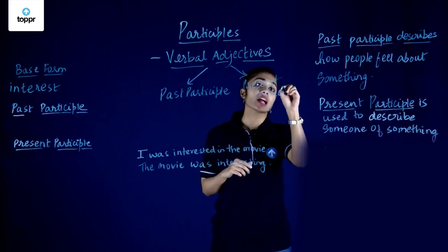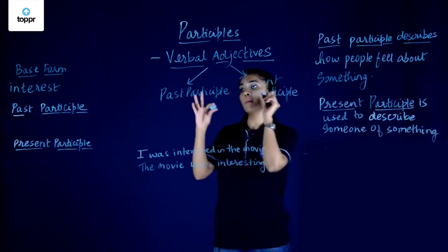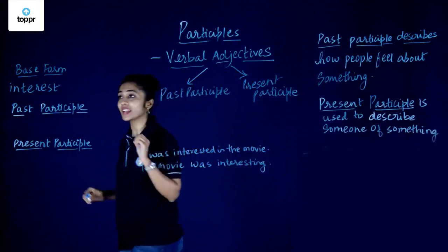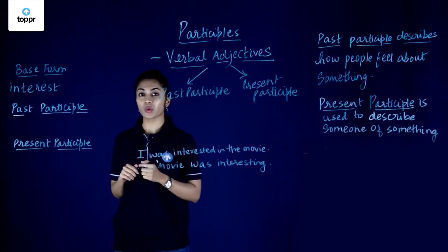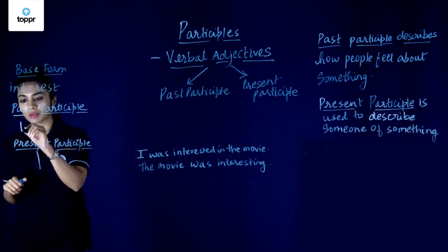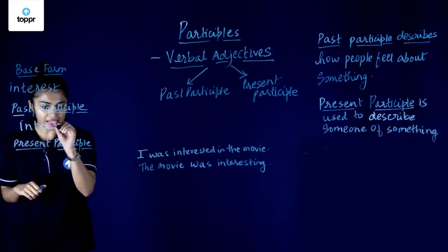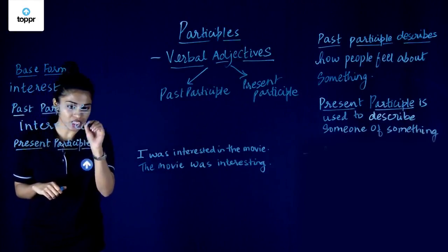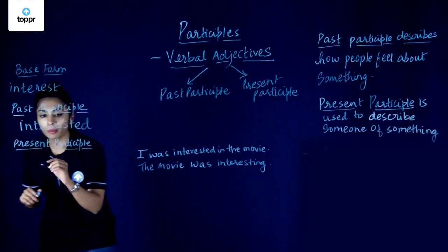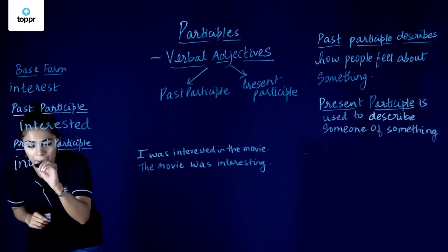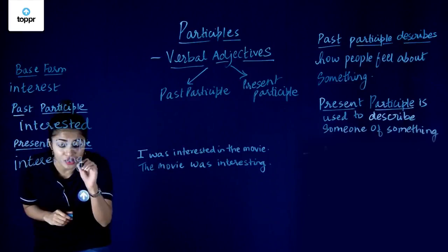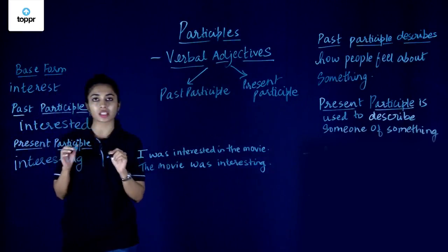Let's understand how we form the past participle and present participle by taking the base verb 'interest'. To form its past participle, we simply add an -ed to the base verb 'interest' and we get 'interested', which is a past participle. To form the present participle, we simply add an -ing to our base form 'interest' and we get the present participle 'interesting'.